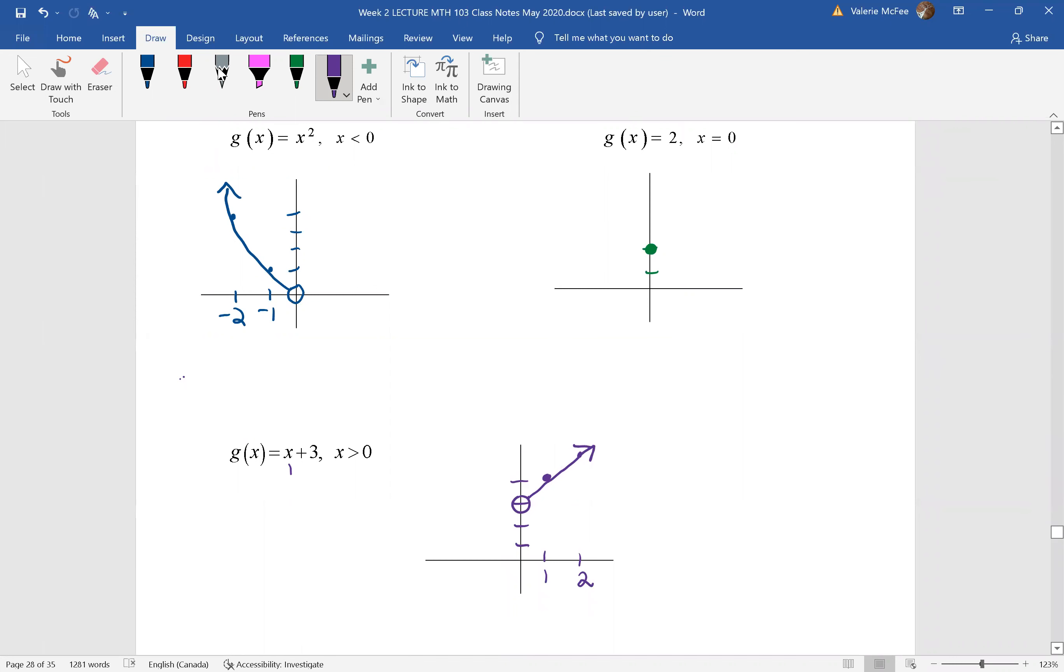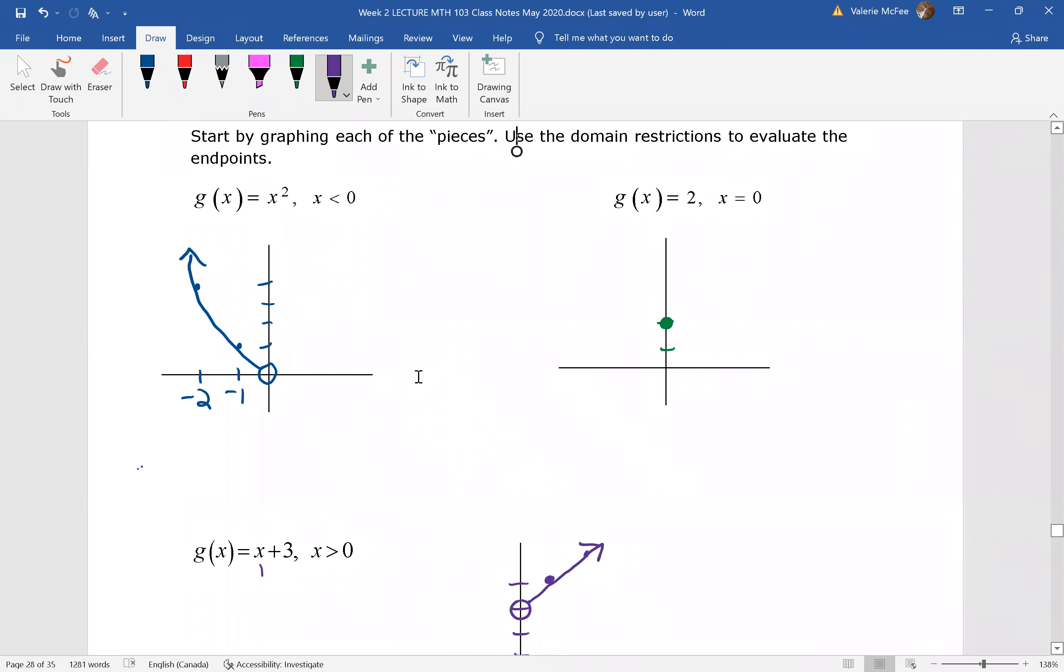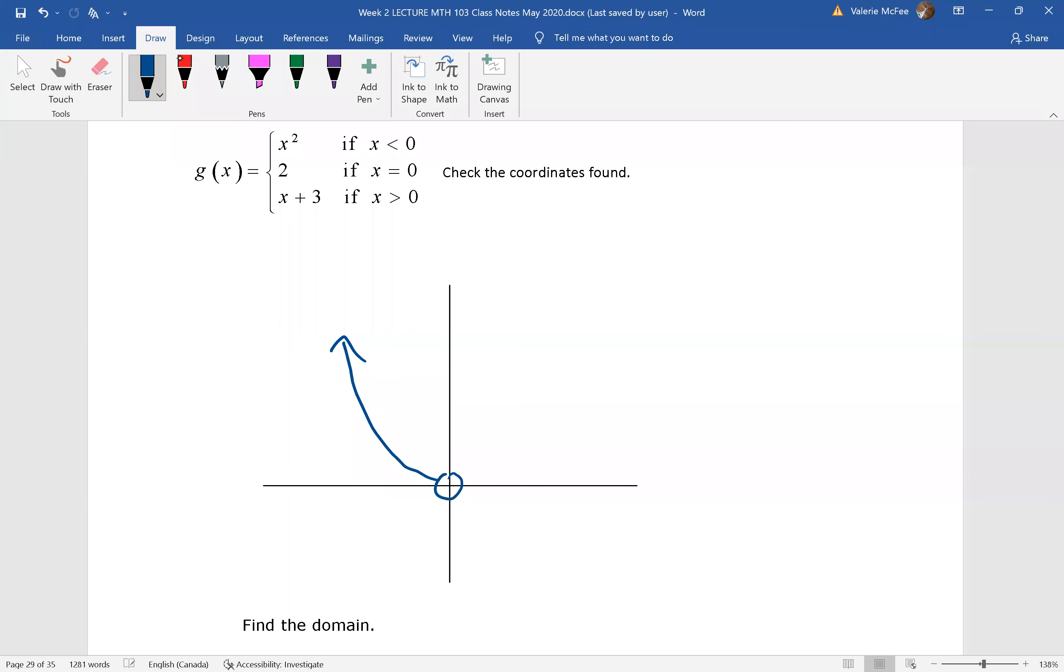When we graph our piecewise defined functions, all three of these pieces appear on one graph. So let's take this piece from the first restriction and put it on our graph. There's the first piece. Now let's take the second piece. When x is 0, y is 2. Remember that was a single point with a closed circle.